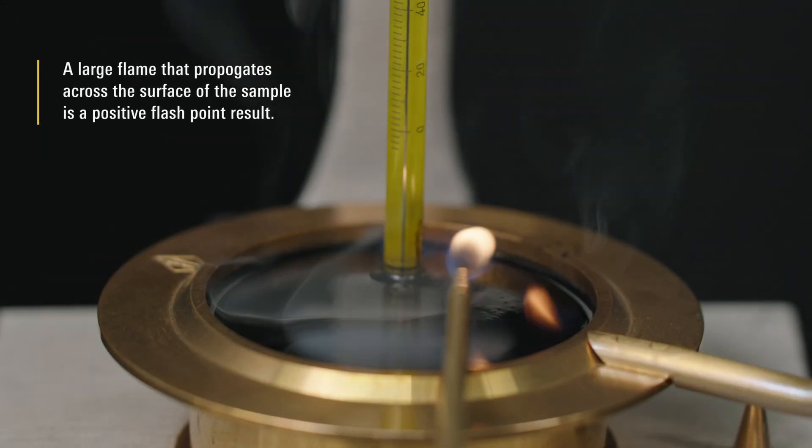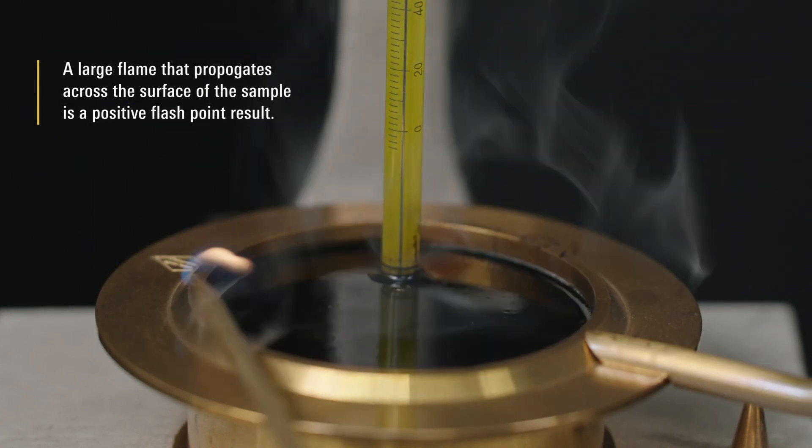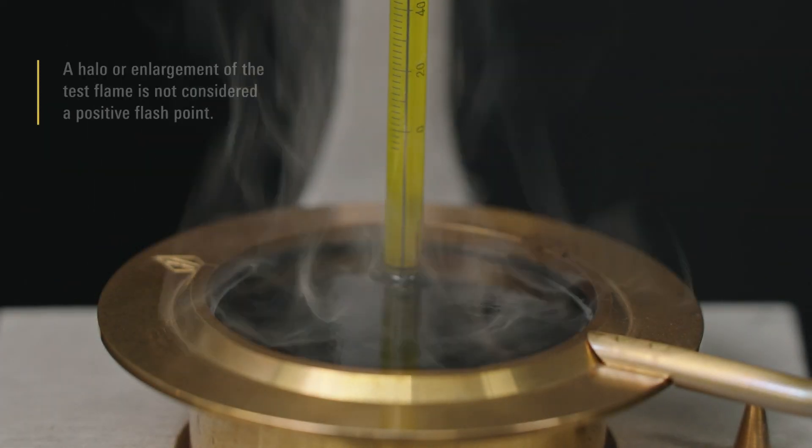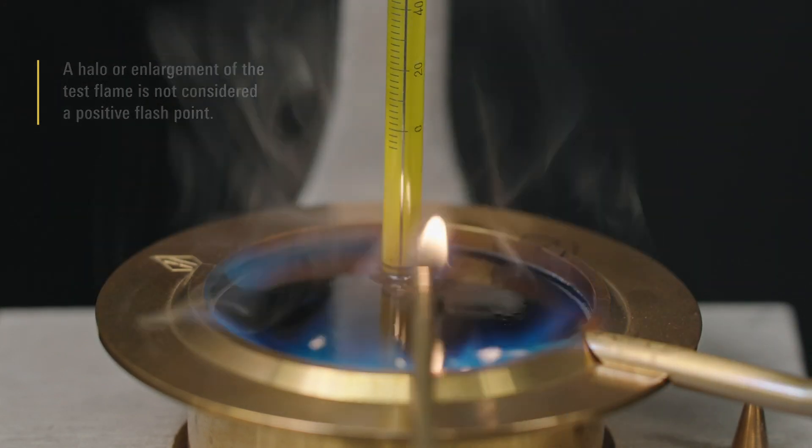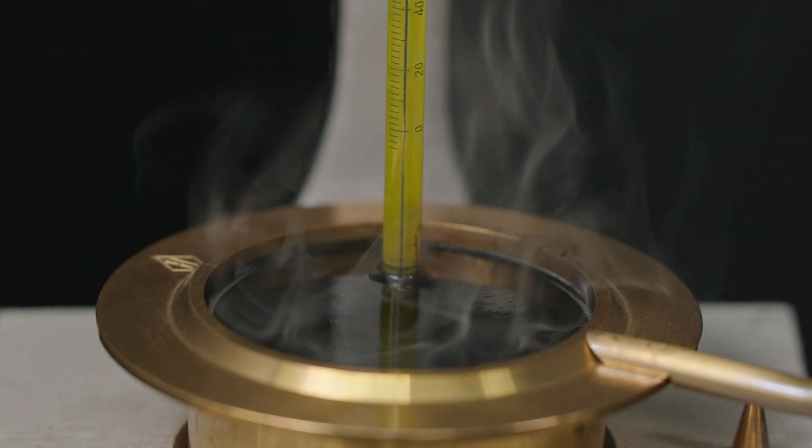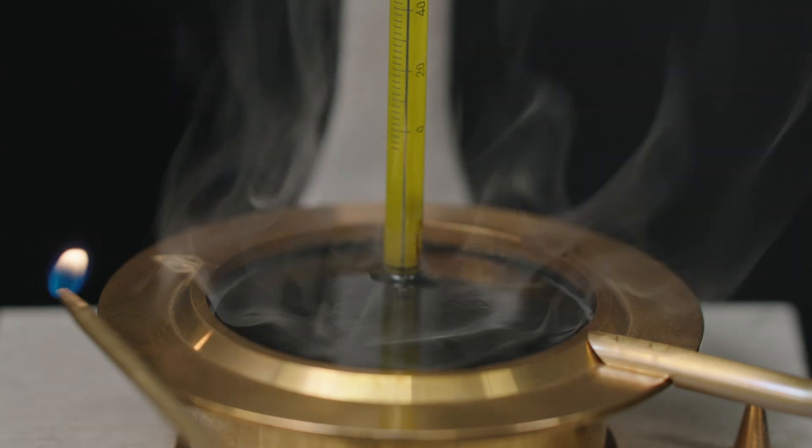A large flame that propagates across the surface of the sample is a positive flash point result. A halo or enlargement of the test flame is not considered a positive flash point. Continue to apply the test flame until the large flame is observed.